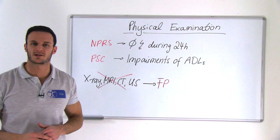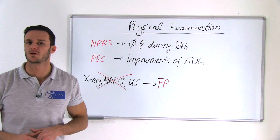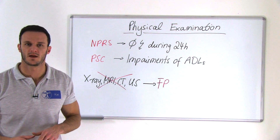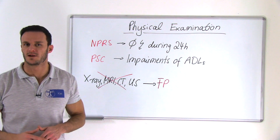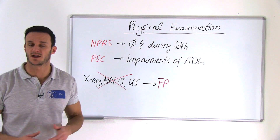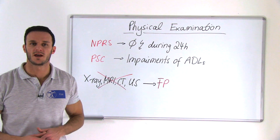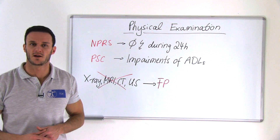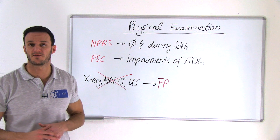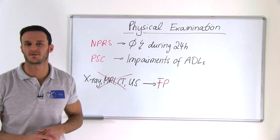Other clinometric tools like the neck disability index, for example, might be used according to the therapist's own opinion. Due to the fact that the validity of different imaging techniques like X-rays, MRI, CT scans and ultrasound is only moderate, and that a lot of false positive degenerative changes can be found in the healthy population, the use thereof is not advised.